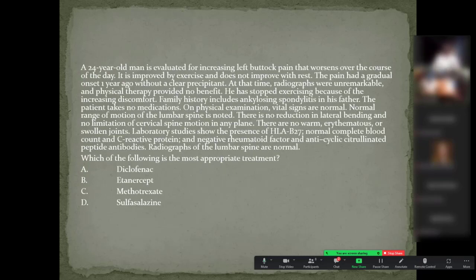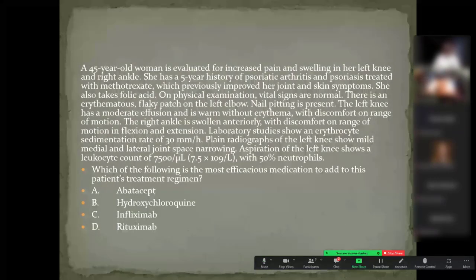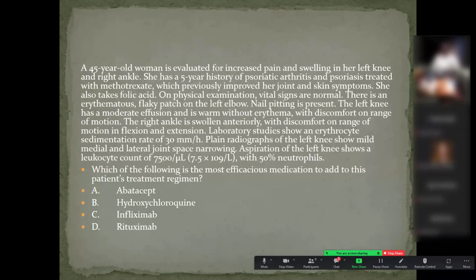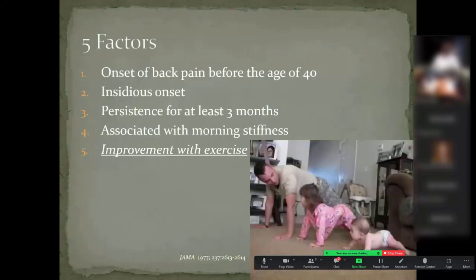The next question asks: which is the most appropriate treatment — diclofenac, etanercept, methotrexate, or sulfasalazine? The case is a young man with buttock pain that improves with exercise, doesn't improve with rest, symptoms for about a year, positive HLA-B27, negative CRP, and normal plain films. The last question asks which medication to add for a middle-aged lady with psoriasis and psoriatic arthritis on methotrexate, elevated ESR, and a white count over 500 on joint aspiration of her left knee.